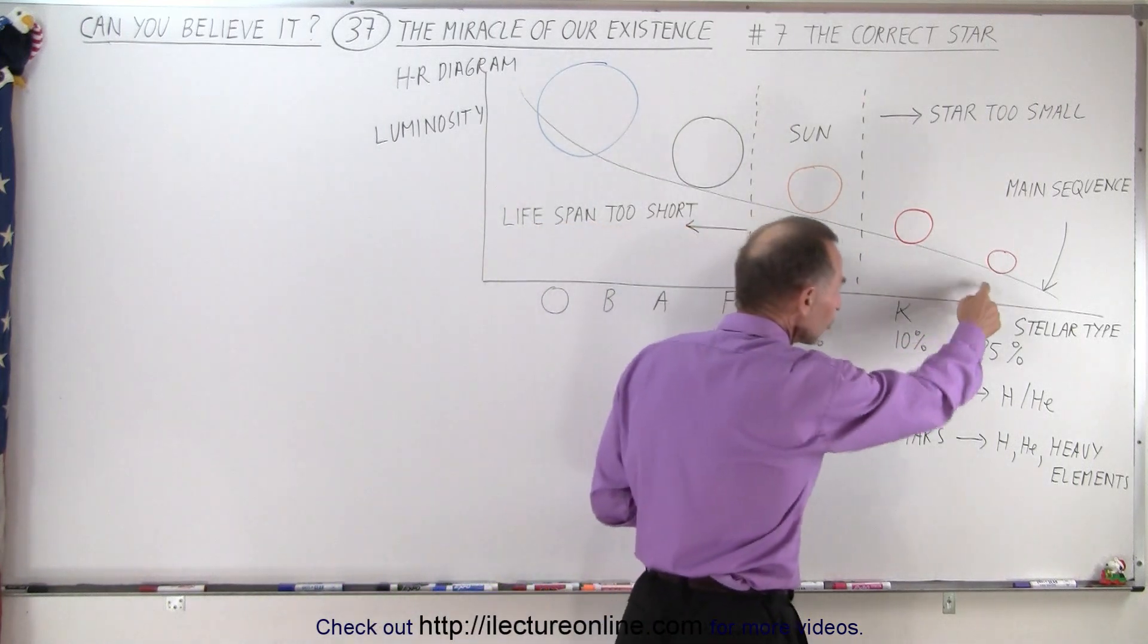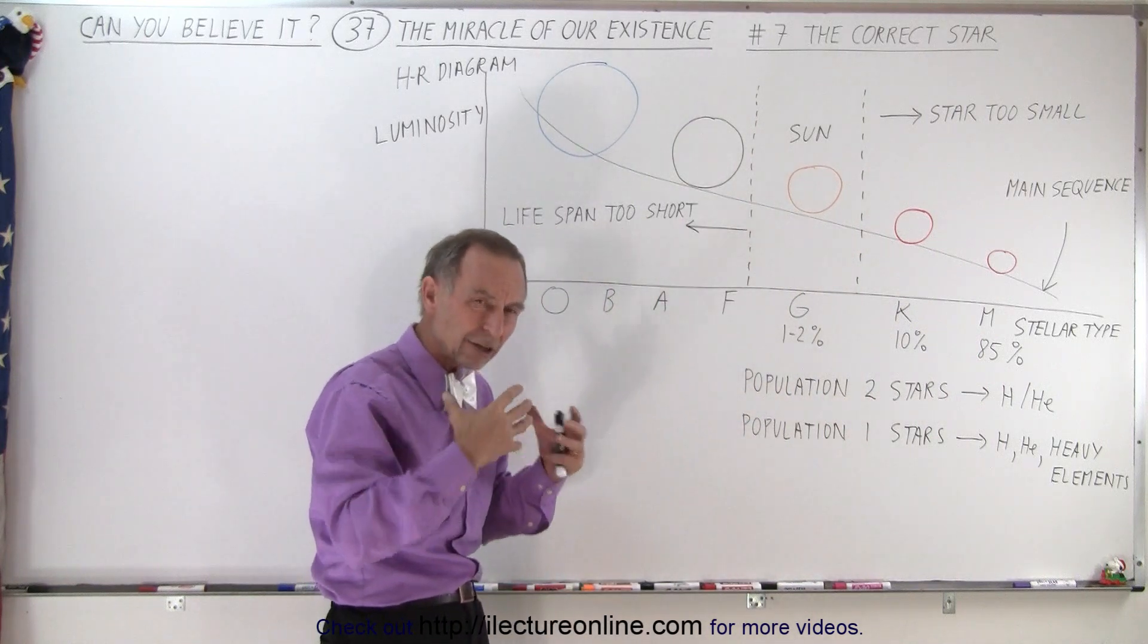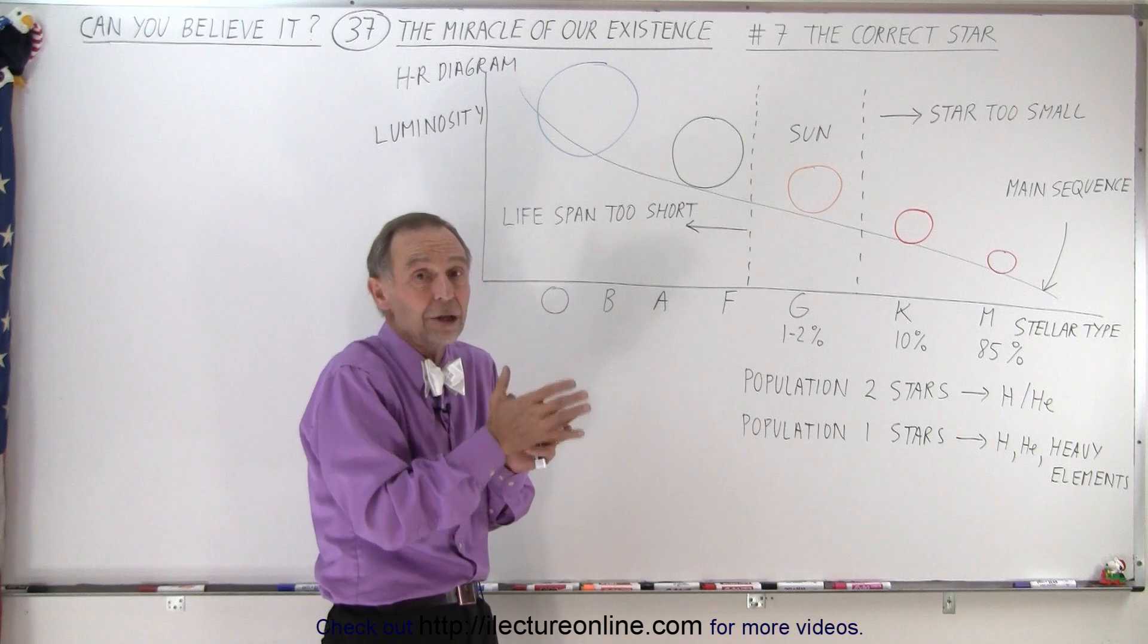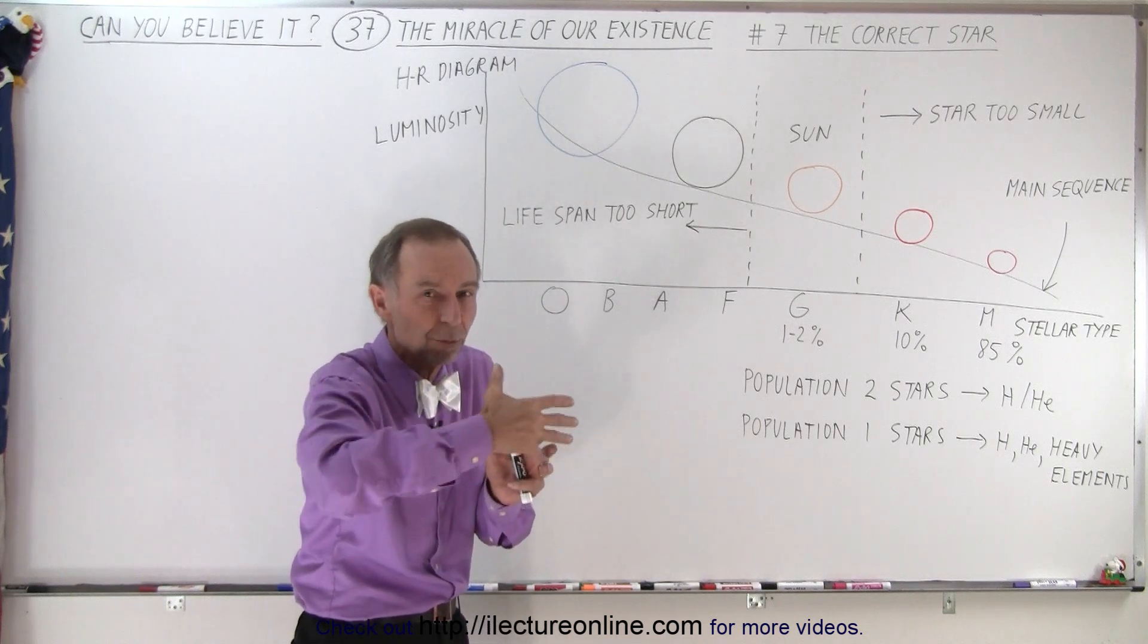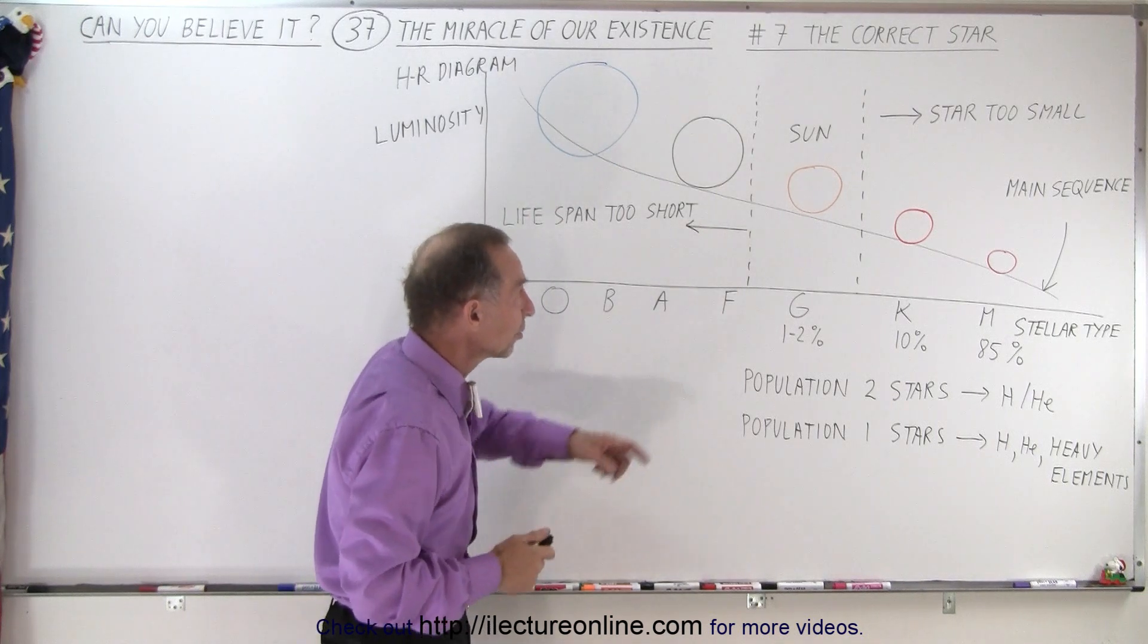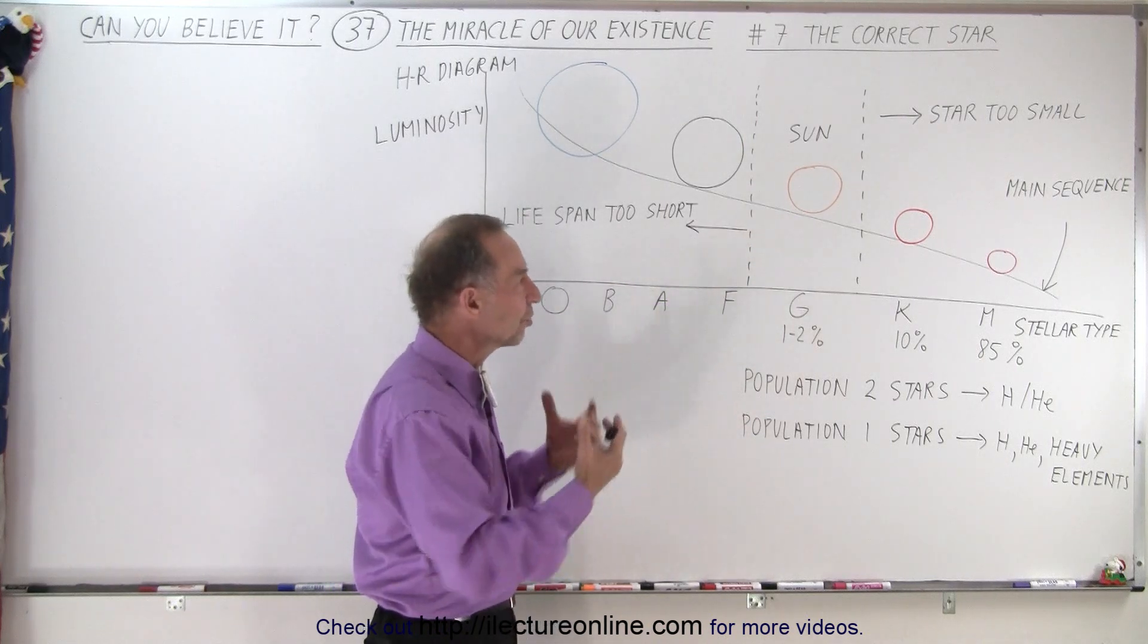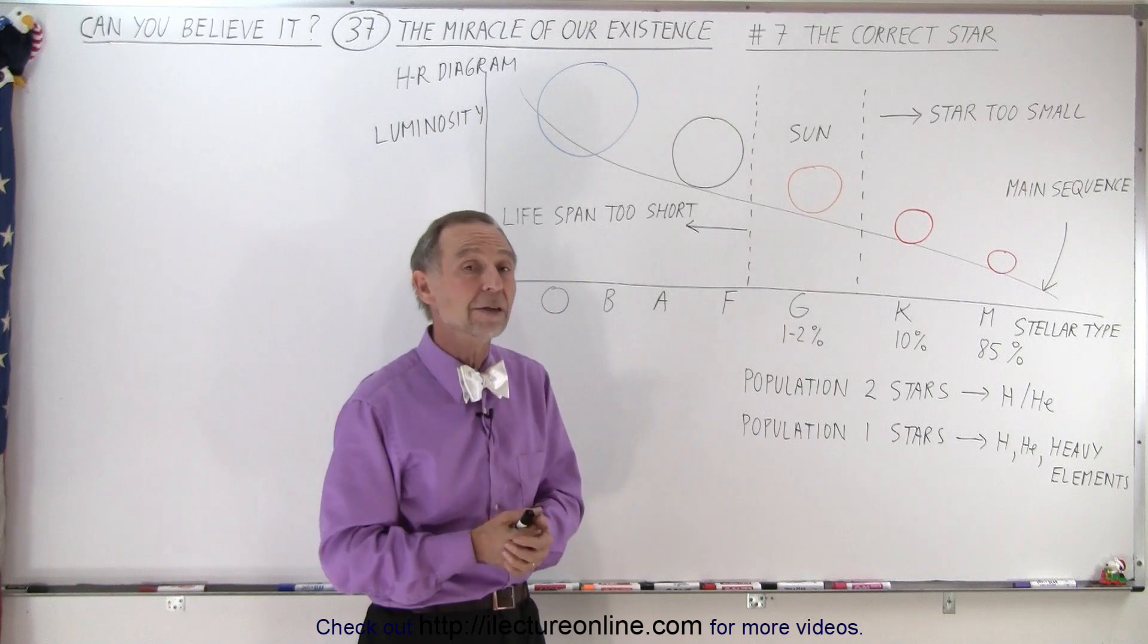On top of that, these small stars, they're not very stable in their flux and energy output. They vary a lot more, which would make it difficult to have a constant solar energy reception on that planet. The Sun is very, very stable, and because of that, we have the same amount of sunlight reaching the Earth almost on a continual basis.